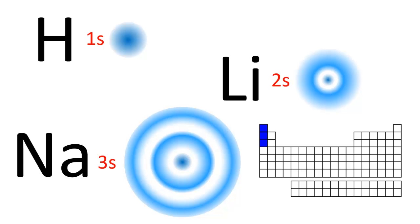Since the 3s orbital is larger than the 2s orbital, which is larger than the 1s orbital, sodium is larger than lithium, which is larger than hydrogen. With each step down a group of the periodic table, the principal quantum number increases by one, resulting in larger orbitals and therefore larger atoms.